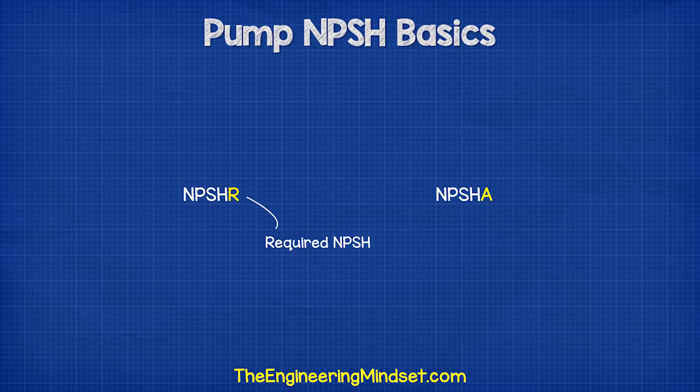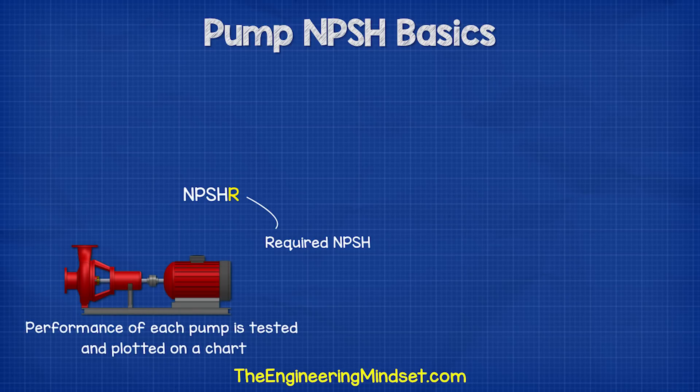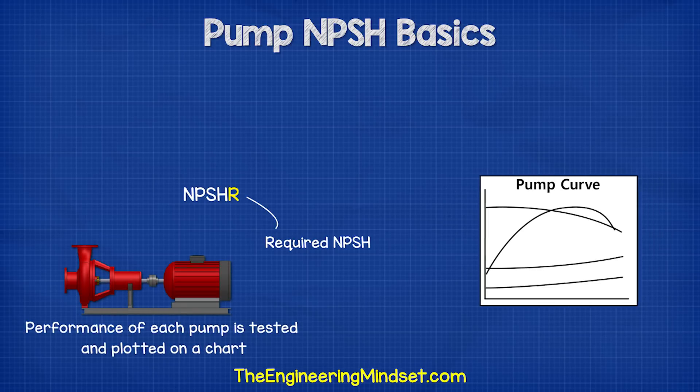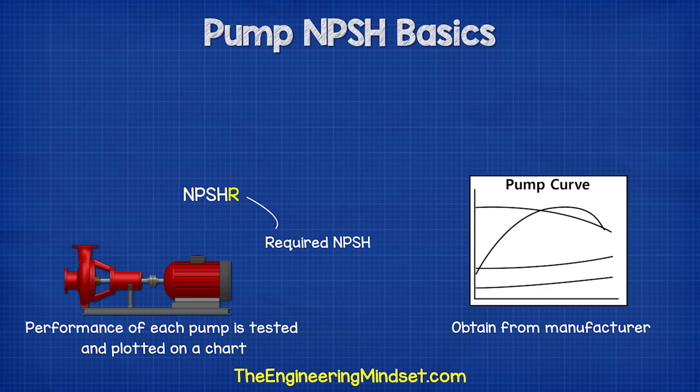The R is the required NPSH. Each pump is tested for this value and it can be obtained from the pump manufacturer via the pump's operating chart. We're going to break that chart down and cover it in detail in a dedicated video — links in the video description below.